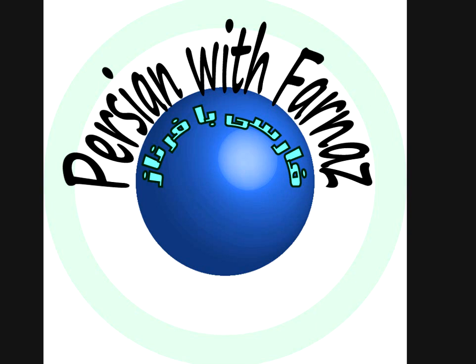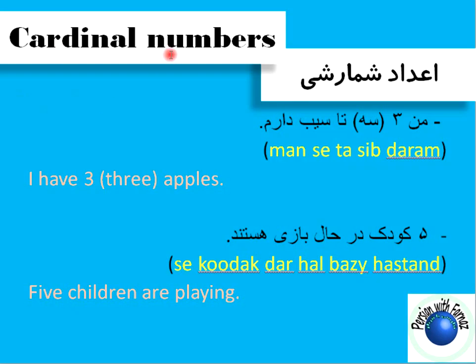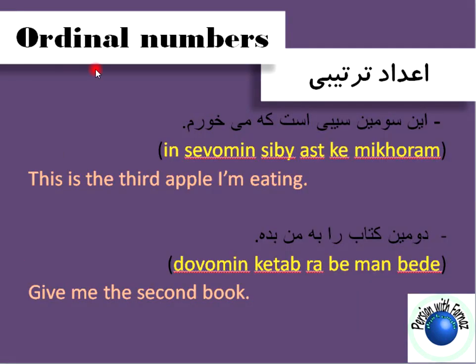First of all, I want to complete the lesson on numbers. As you may remember, first I talked about cardinal numbers — what they are in Persian and how you can use them. Today I want to talk about ordinal numbers. What's the difference between ordinals and cardinals? For example, if you have three apples, you use cardinal numbers to say that.